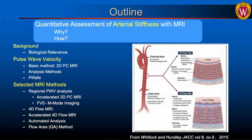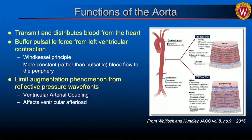The function of the aorta is to supply, transmit, and distribute blood from the heart to the rest of the body. Other functions less often mentioned are that it also buffers pulsatile forces from left ventricular contraction — known as the Windkessel principle — to have a more constant rather than pulsatile blood flow to the peripheral vessels. It also limits augmentation from reflective pressure waveforms. This involves ventricular-arterial coupling and ventricular afterload. Diseases like bicuspid aortic valve, Marfan syndrome, and pulmonary hypertension are also motivation for arterial stiffness measures.